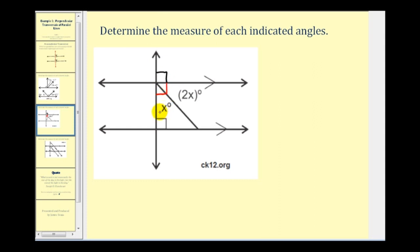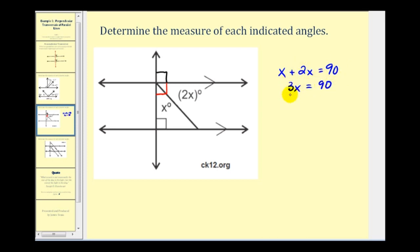By using the angle addition postulate, we can conclude that x degrees plus two x degrees must be equal to ninety degrees. Let's go ahead and solve this equation for x. We would have three x equals ninety. We divide both sides by three, and we have x equals thirty.